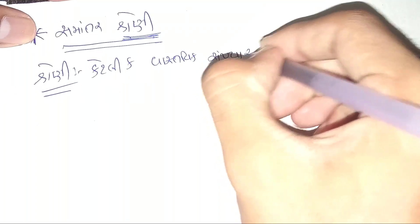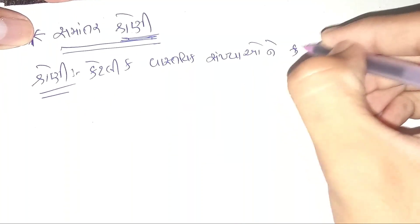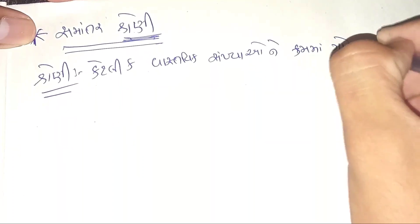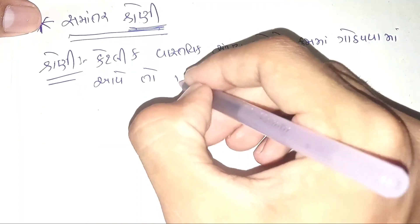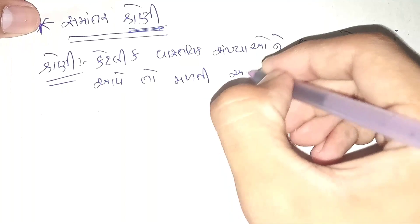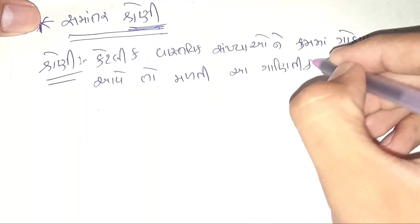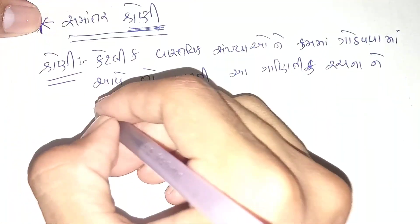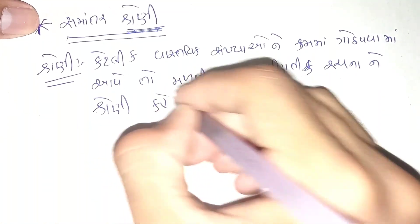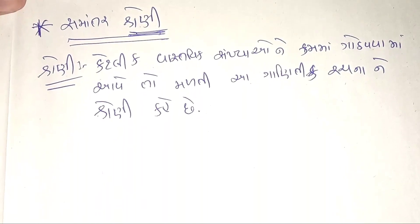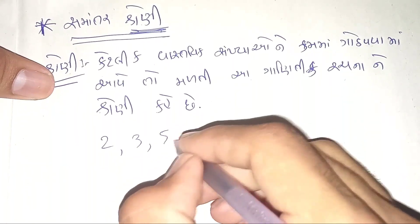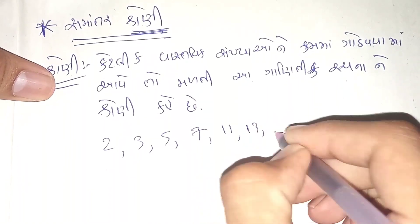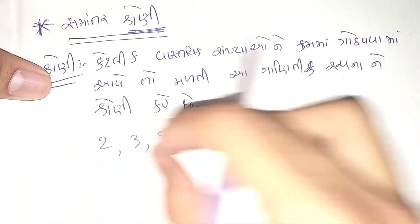વાસ્તવિક સંખ્યાઓ ને ક્રમમાં ગોઠવવામાં આવે — ક્રમમાં ગોઠવવામાં આવે — તો મળતી આ ગાણિતિક રચનાને શું કહેવાય? — શ્રેણી કહે છે. યાદ રાખો: 5, 7, 11, 13... — આ બધી સંખ્યાઓ ક્રમમાં ગોઠવેલી છે.